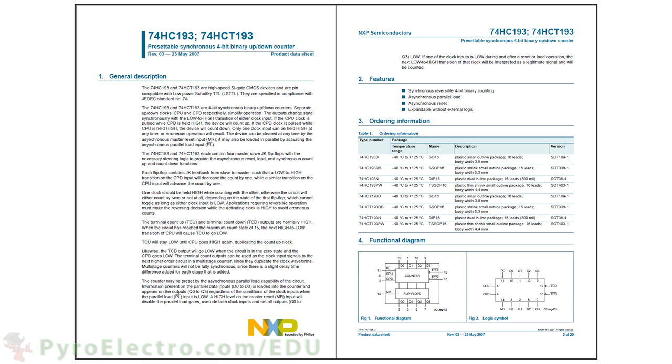Next, we have the 74HC193. This is a 4-bit counter, similar to the one we built earlier in the course with 4D flip-flops. The main difference is that it can count up and down, as well as be preset to certain values.